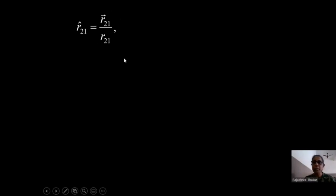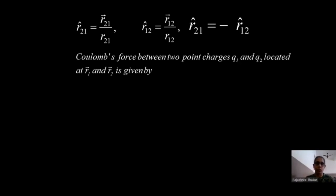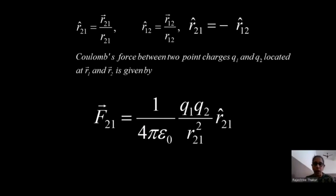The unit vector R̂21 is vector R21 divided by its magnitude. Similarly, the unit vector R̂12 is vector R12 divided by its magnitude. Both are equal but opposite to each other, because the distance between the two objects remains the same — the magnitude stays the same but the direction has changed. So unit vector R̂21 = −R̂12. Therefore, the Coulomb's force on charge Q2 due to charge Q1 is: F21 = 1/(4πε₀) × Q1Q2/R21² × R̂21.